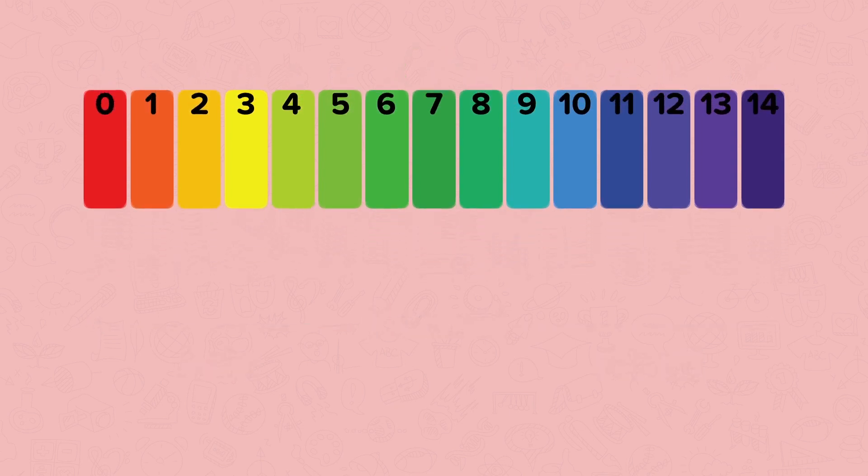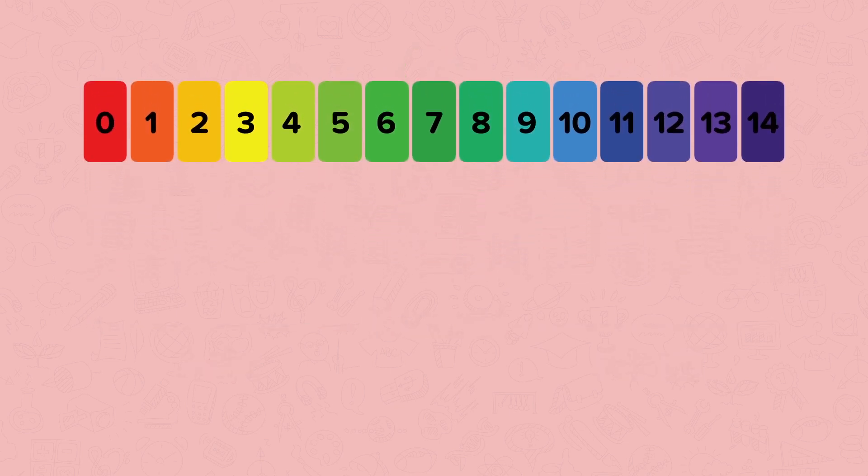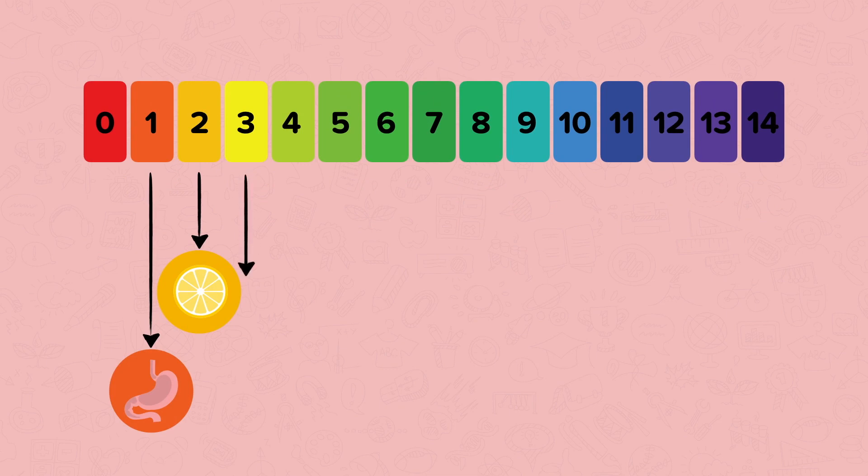Here are some examples of everyday chemicals. Stomach acid, which is hydrochloric acid, has a pH of 1. Lemons contain citric acid and have a pH of 2. Vinegar contains acetic acid and has a pH of 3. Water is neutral and has a pH of 7.